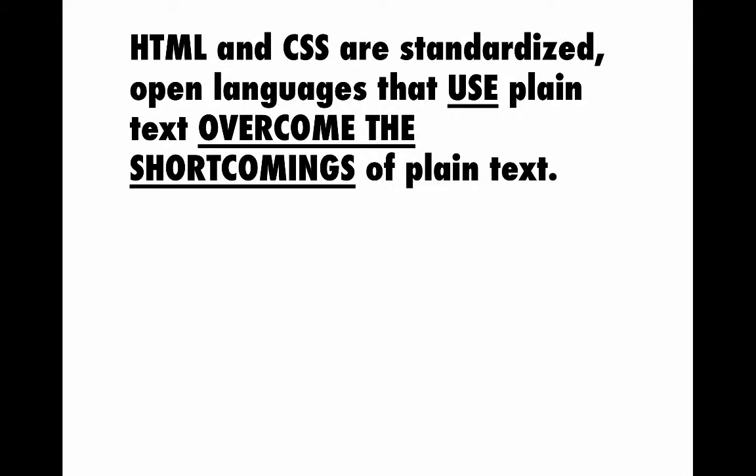But in summary, here's what HTML and CSS are doing or what they're for. They're standardized, agreed upon, open languages, not proprietary, not secret to make money, but open so everyone can use them. They're languages that use plain text to overcome the shortcomings of plain text. So that's what plain text is. That's the shortcomings it has. And that's why HTML and CSS needed to be invented. So now that you know that, you can move on to the next video where I'll explain what HTML is all about.